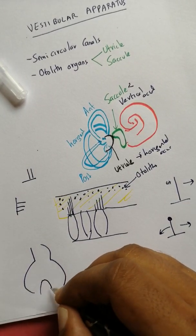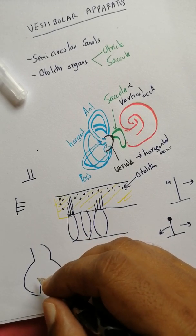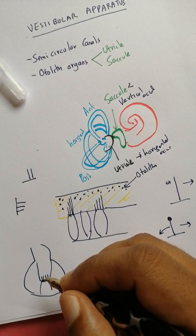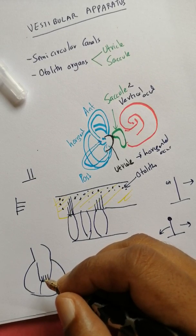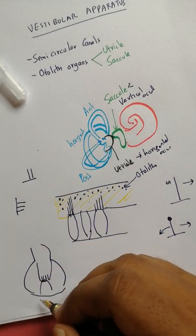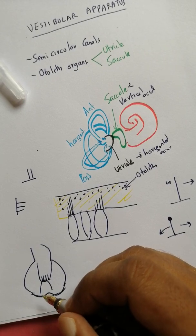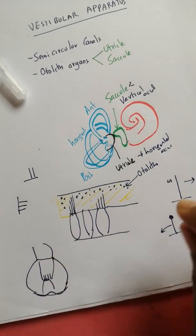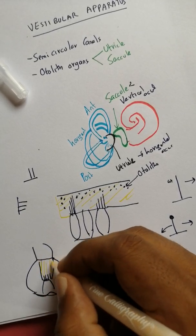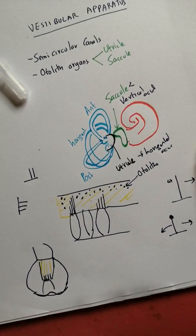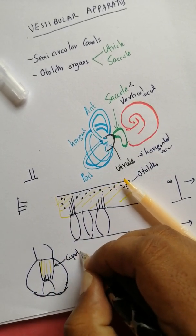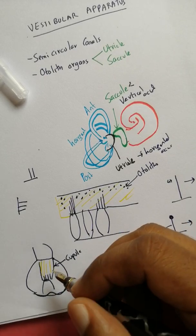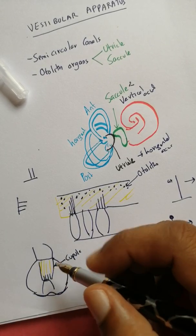This whole apparatus is known as... There is a projection in the ampulla that's known as the crista ampullaris. In this case, the hair cells are actually embedded in something known as the cupula. It's like a gelatinous mass, the cupula, into which the hair cells are embedded, and there are no otoliths in this.